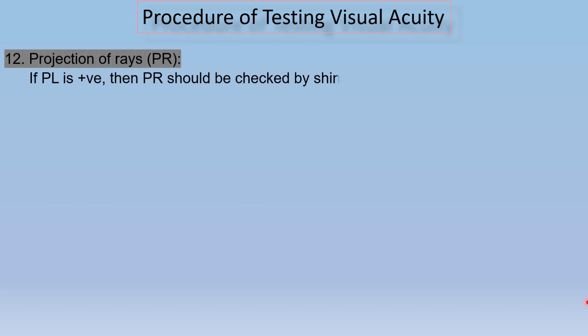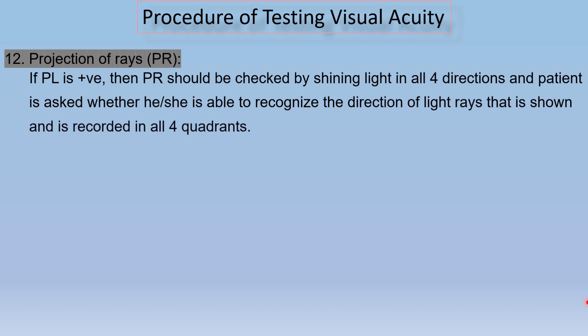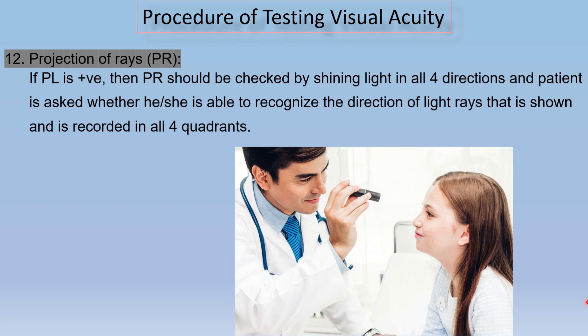Step number 12 is projection of rays. If perception of light is positive, then projection of rays should be checked by shining light in all four directions — temporal, nasal, superior, and inferior — and the patient is asked whether they can recognize the direction of the light rays. The response is recorded for all four quadrants accordingly.